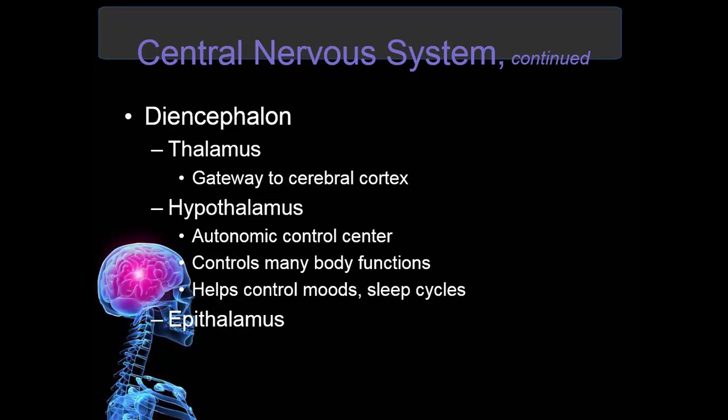The second part is the diencephalon, which consists of the thalamus — the relay center for all signals coming into the brain. It takes all the signals and sends them to the correct region of the brain, and is also known as the gateway to the cerebral cortex. It also includes the hypothalamus, which is the autonomic control center. It controls many bodily functions including heart rate, blood pressure, respirations (rate and depth), pain and pleasure, fear, body temperature, food and water intake and balance, mood, sleep cycles, and digestive motility.